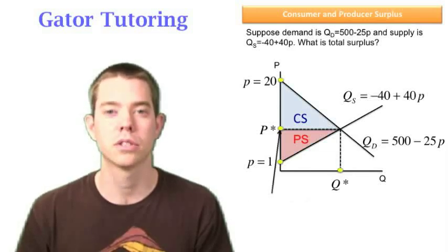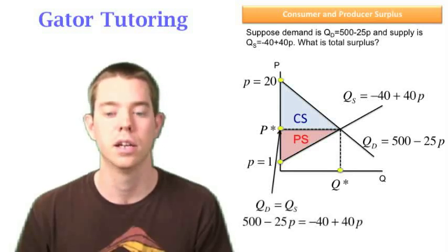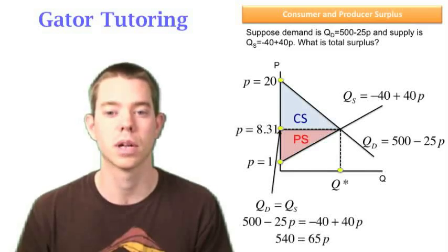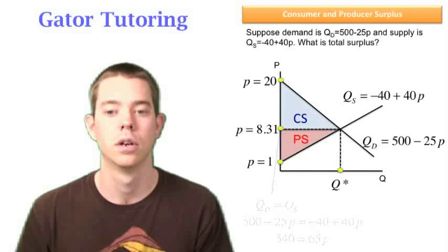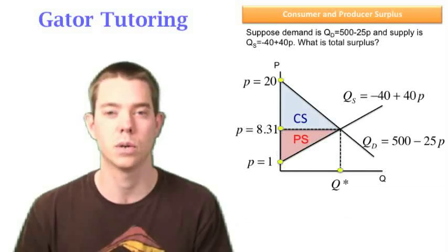Well, this point, P star, is where quantity supplied equals quantity demanded. So we can plug that in and solve for P. And in this case, we solve for price to be equal to 8.31 when we set quantity supplied equal to quantity demanded.